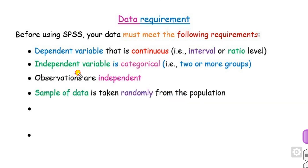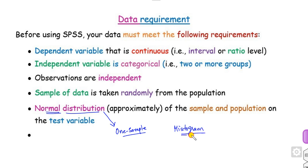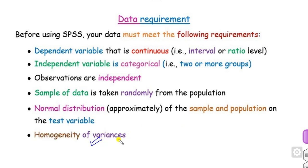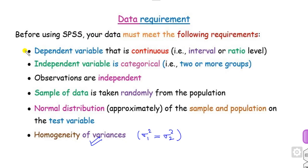Another requirement is that the observations must be independent and the samples must be randomly taken from the populations. The last two major assumptions are: the populations must be approximately normally distributed — we will check this by drawing a histogram — and the last one is homogeneity of variance, meaning that if you have two populations with variances sigma1 and sigma2, they must be equal. Make sure these assumptions — numbered 1 through 5 — are satisfied.